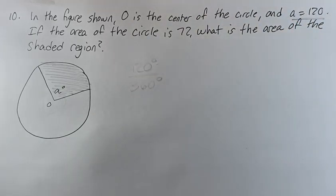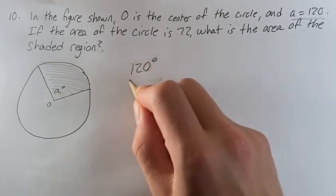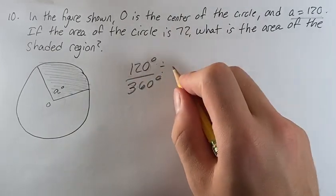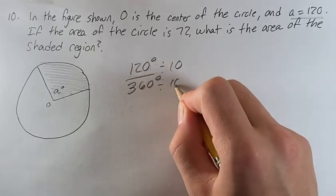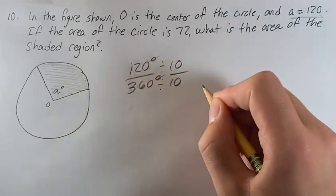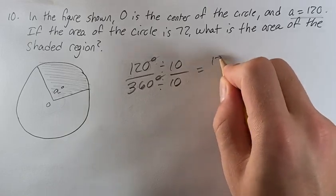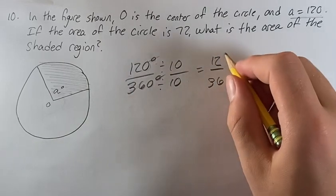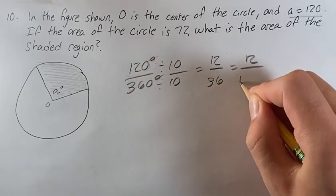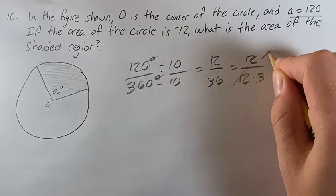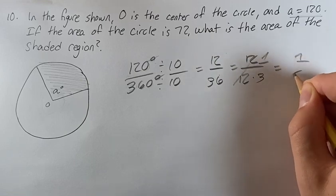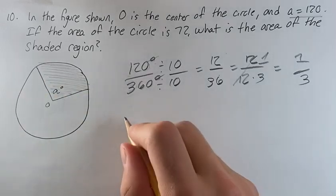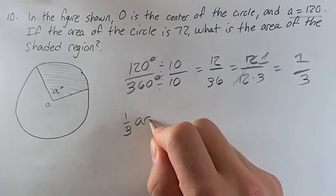We're given A is 120 degrees. So 120 degrees divided by 360 degrees. If that's not immediately obvious, that's okay. We can divide both sides by 10, get rid of the degree sign. 120 divided by 10 is 12, 360 divided by 10 is 36. And we can see that this is 12 over 36, which is 1 third. So 120 degrees is 1 third of 360 degrees, meaning this region is 1 third of the area of the circle.